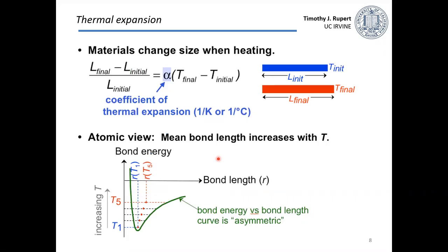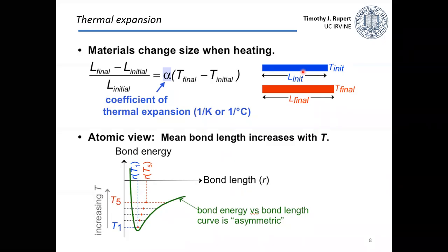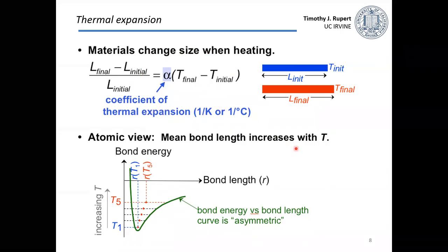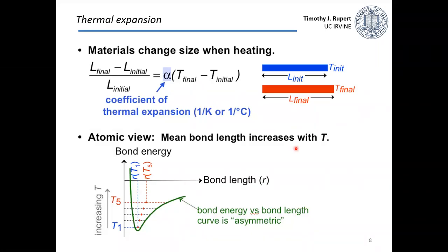Thermal expansion describes how materials change size when they're heated. The basic idea is that a material at some initial temperature has given dimensions; if we heat it up, that bar of material expands and becomes larger. The thermal expansion coefficient describes this: the change in length normalized by the initial length — essentially a strain — equals the thermal expansion coefficient alpha multiplied by the change in temperature. The atomic view is that the sample gets larger because the average bond length increases with temperature, which you can understand from the asymmetric potential energy surface for atomic bonding.